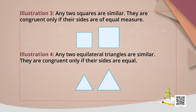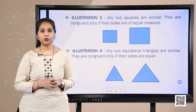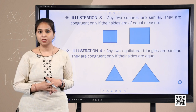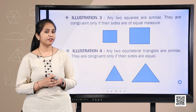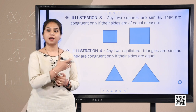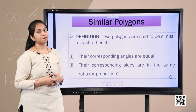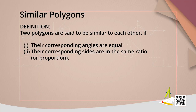Two triangles with the same shape but different sizes are also similar but not congruent. From this we can conclude that all figures that are congruent are also similar. But think about this: can we say all congruent figures are similar? You will get the answer in this same session. Similar polygons are defined as polygons whose corresponding angles are equal and whose corresponding sides are in proportion.